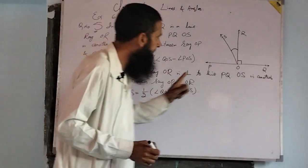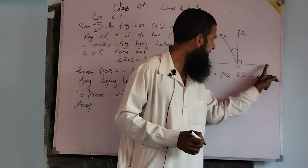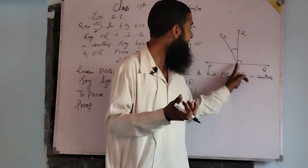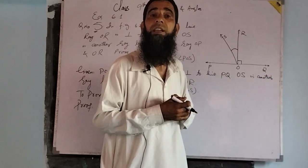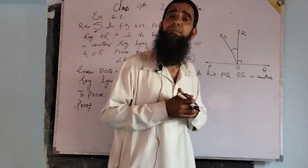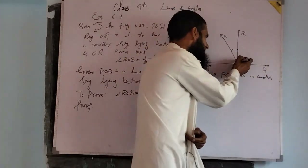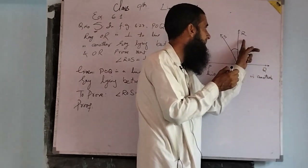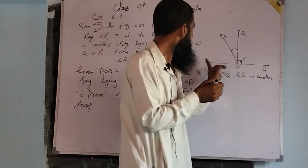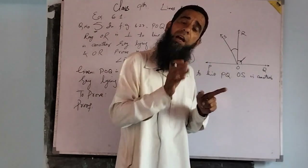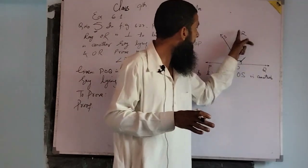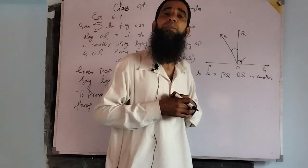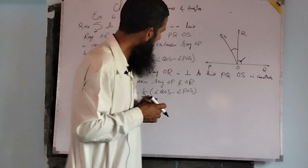Dear students, if we see angle Q-O-R, it is a right angle, as O-R is a ray perpendicular to line P-O-Q. Yeh jo angle Q-O-R hai, it is 90 degrees. And angle P-O-R is also 90 degrees, as O-R is a ray perpendicular to line P-O-Q.